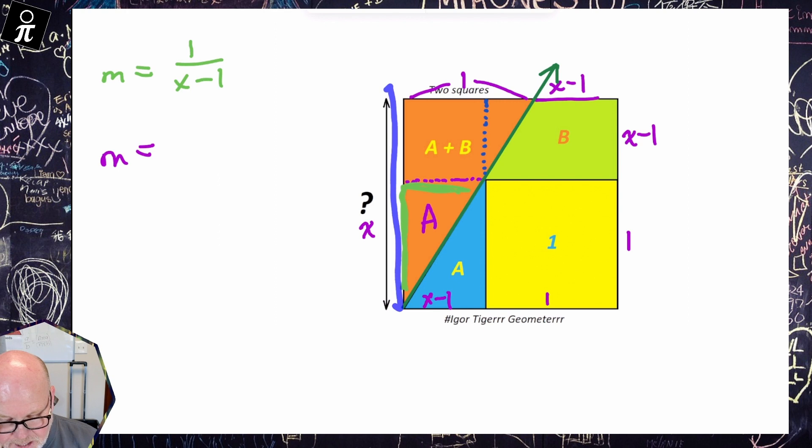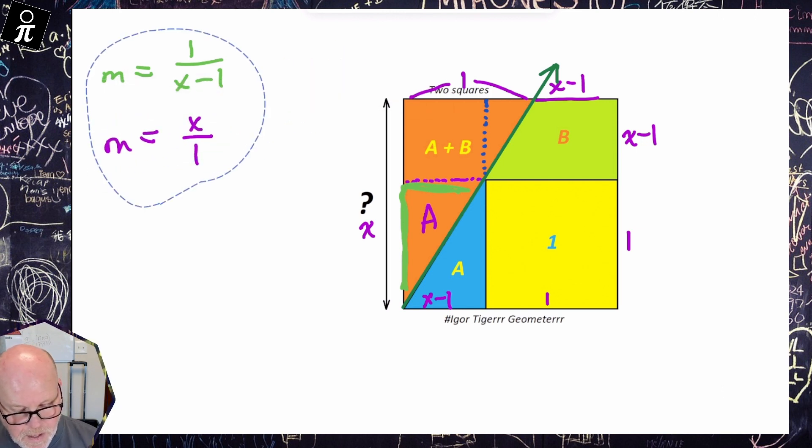So that whole slope right there, the rise is X and the run is one. So now we've got two different ways to describe the same slope.